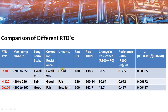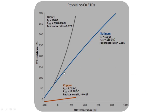If you see linearity, it is best for copper, then platinum, and then nickel. Here you can see the resistance ratios and alpha values for these three RTDs. From the graph, copper RTDs have the best linearity, followed by platinum and then nickel.